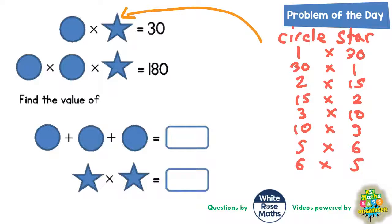We'll start with 1 and 30. So if the circles are both 1's and the star is 30, what does that get us? Well, 1 times 1 is 1 and 1 times 30 would be 30, trying to make 180. So that's no good. Next we'll try 30 for the circles and 1 for the star. Well, 30 times 30 would be 900 and 900 times 1 would be 900, and again that's no good because we're trying to make 180.